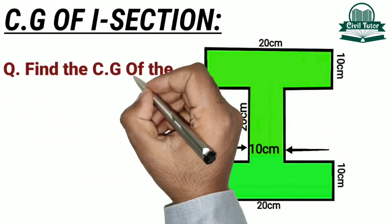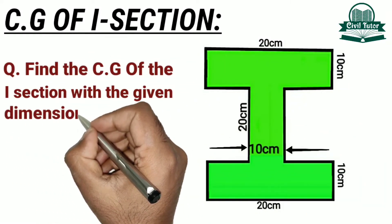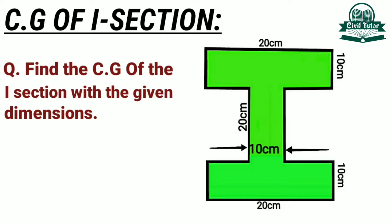In this numerical, we need to find the center of gravity of an I-section with the given dimensions. As you can clearly see in the picture, the dimensions of both its flanges are the same as 20 cm and 10 cm respectively, and the dimensions of its web as shown in the figure.